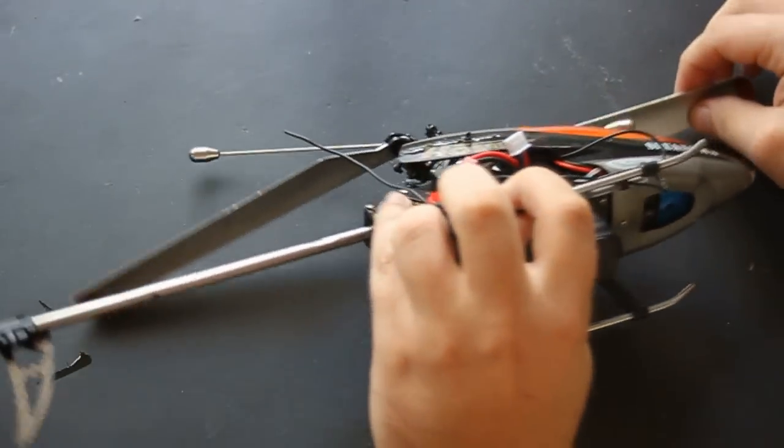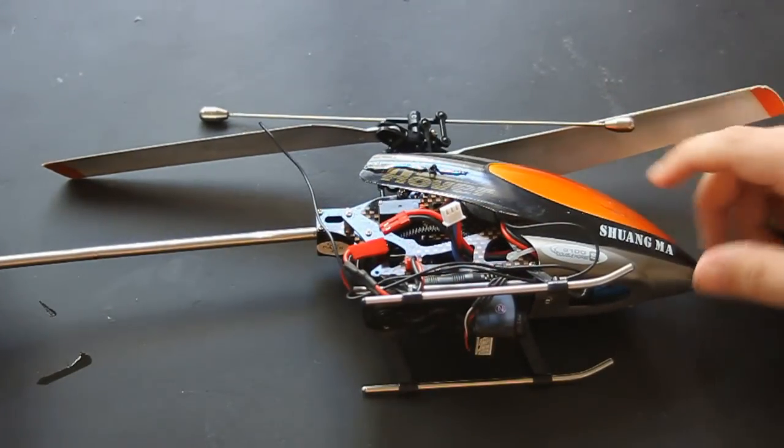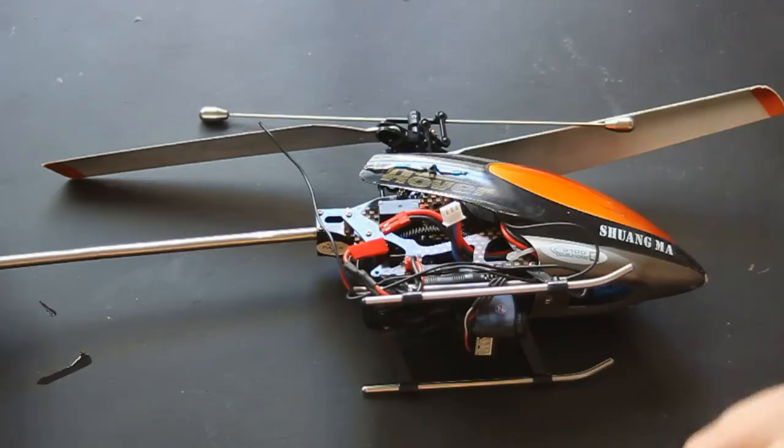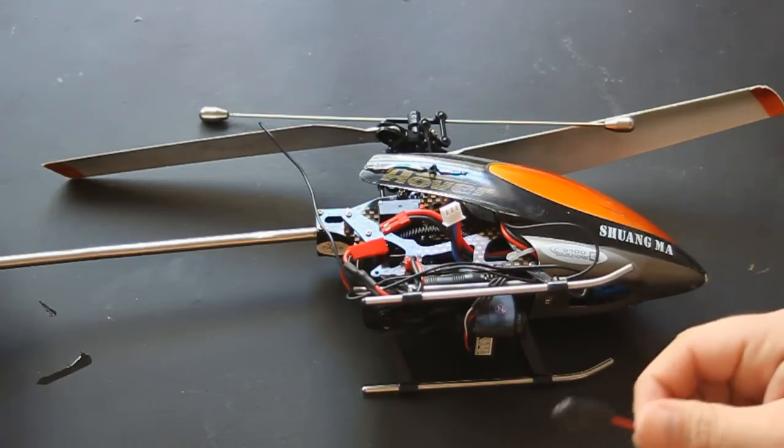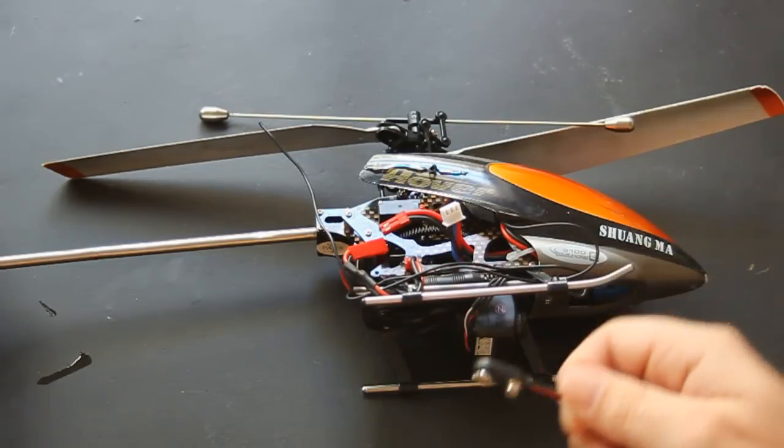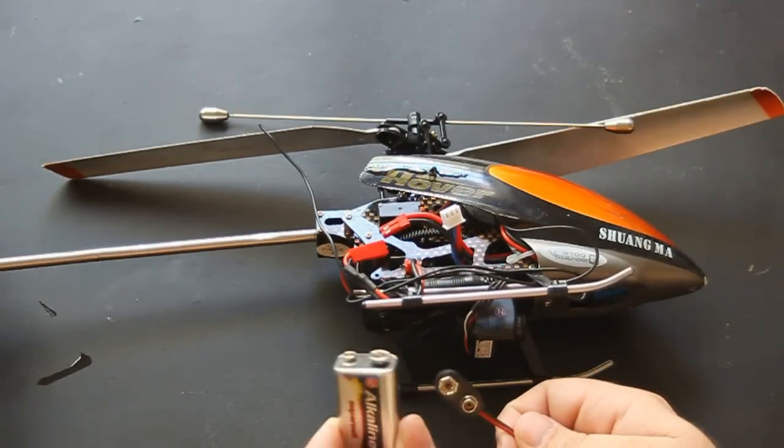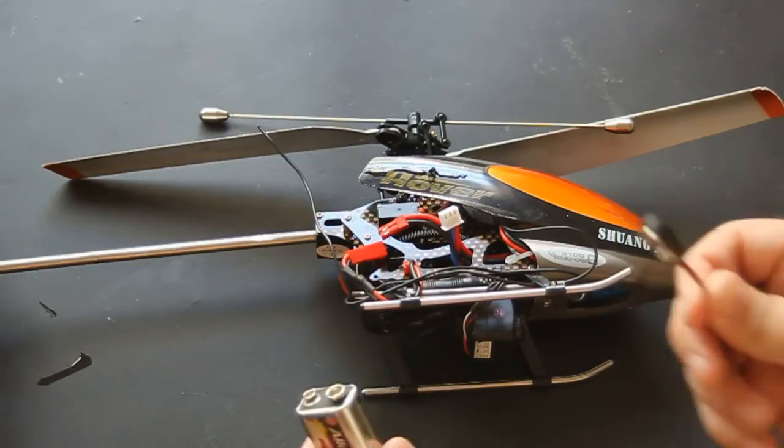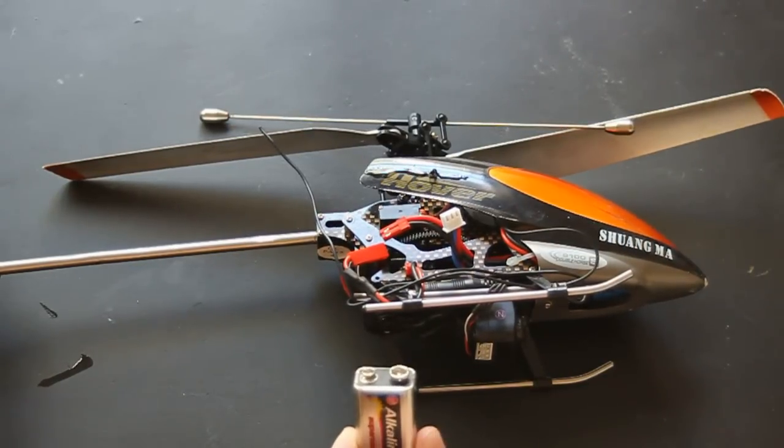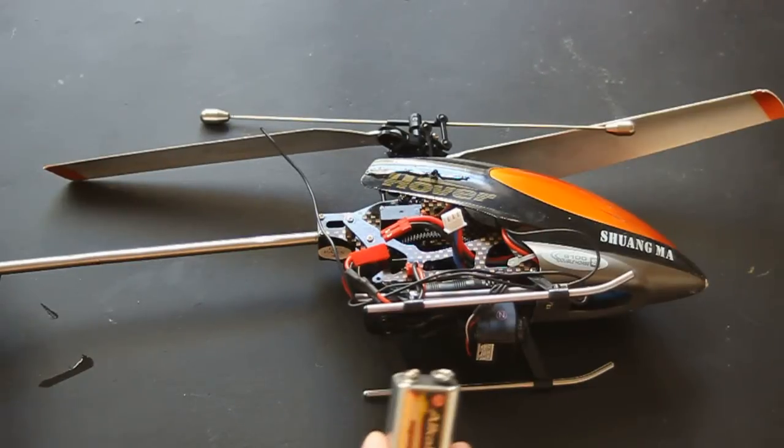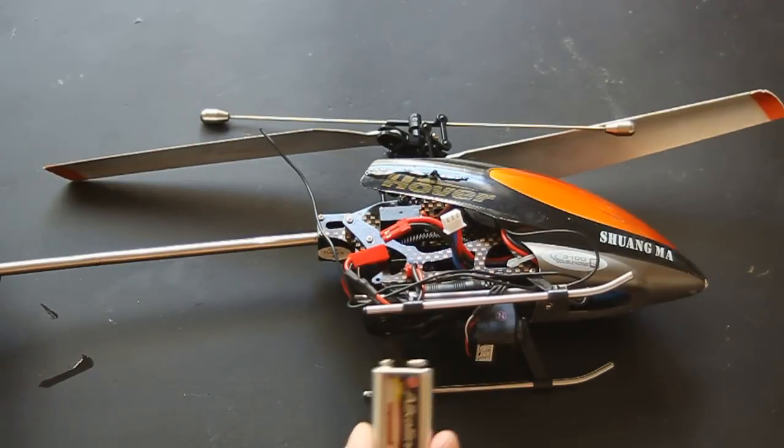First of all, what we're going to go over and what a lot of people are confused about is the power source. To have it fully remote, it suggests you use a 9-volt battery and a supply connector. Well, if you already have a power pack in your aircraft, you don't need to do that. That's just having two power packs.